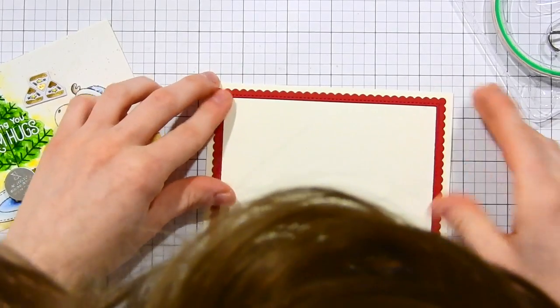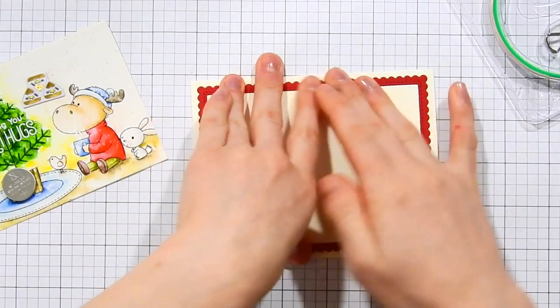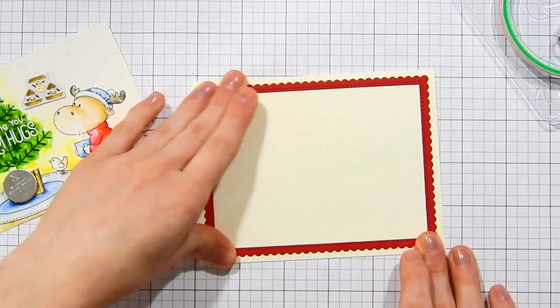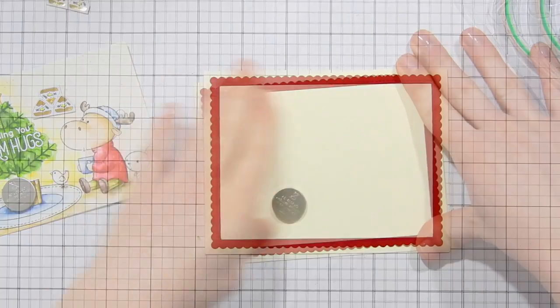So I'm first taking this little frame that I die-cut from some Schoolhouse Red cardstock from Simon Says Stamp and I used the My Favorite Things scalloped frame dies. This is the stitch scalloped frames. I love these scalloped frame dies. They're so pretty.